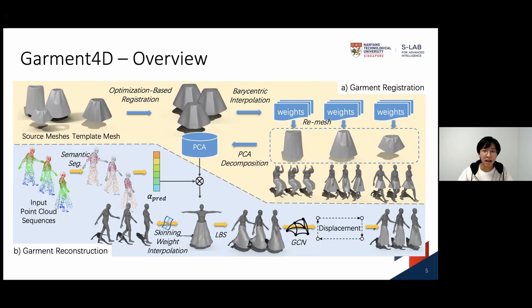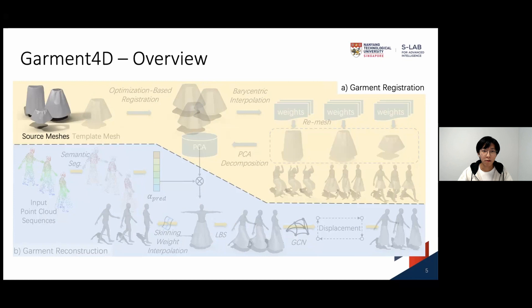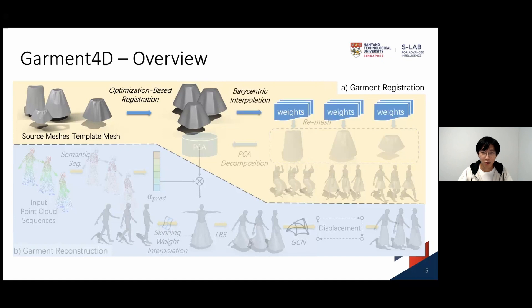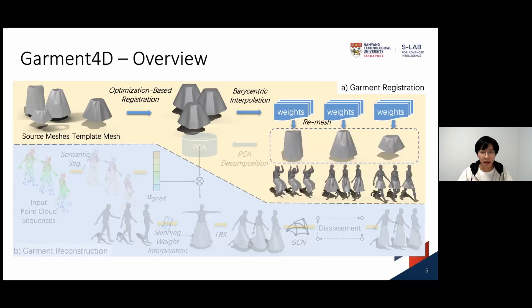Since it's a template-based method, a high-quality garment registration is crucial. For the source canonical garment meshes, which may have very different topologies, we first align them with the template mesh using an optimization-based registration method. Then, barycentric interpolation is performed to get the interpolation weights for each source vertex, which are used to remesh these source meshes into template mesh topology. Using these remeshed canonical garment meshes, a PCA decomposition is performed to characterize a space of garment shapes.